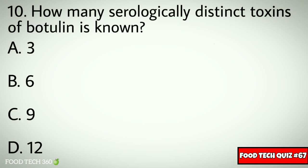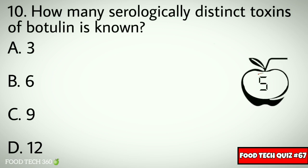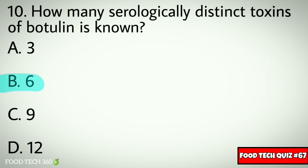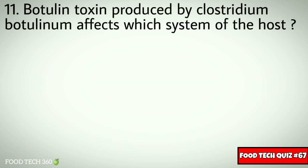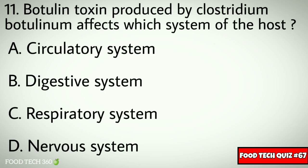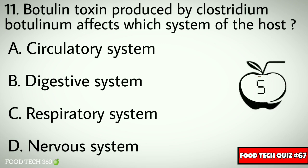Question number ten: how many serologically distinct toxins of botulin are there? Options: A) 3, B) 6, C) 9, D) 12. Correct answer: B) 6. Question number eleven: botulin toxin produced by Clostridium botulinum affects which system of the host? Options: A) circulatory system, B) digestive system, C) respiratory system, D) nervous system.